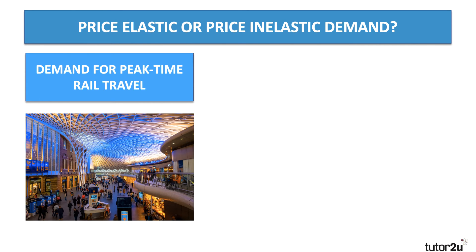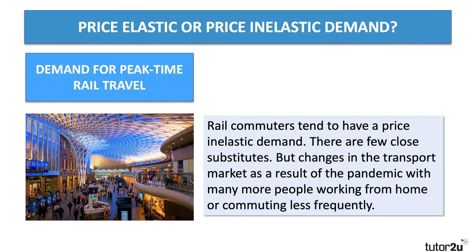In class we thought that typically rail commuters tend to have a fairly price inelastic demand. They have to travel from home to work and back again at peak times. There are relatively few close substitutes — taxis, bus services, or your own private car — but each involves a substantial cost. So we thought the demand was fairly inelastic for commuter travel at peak times.